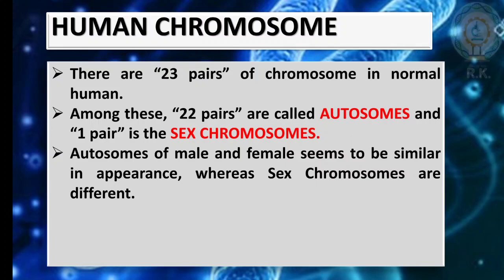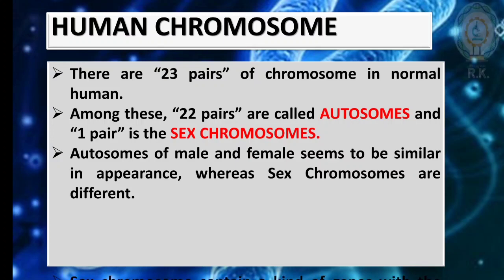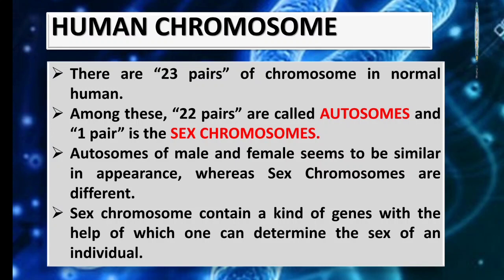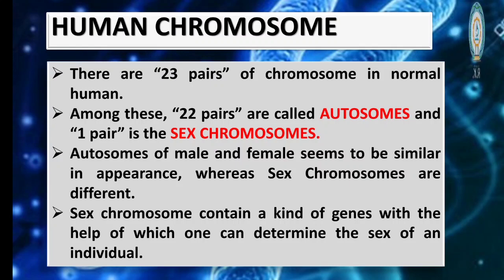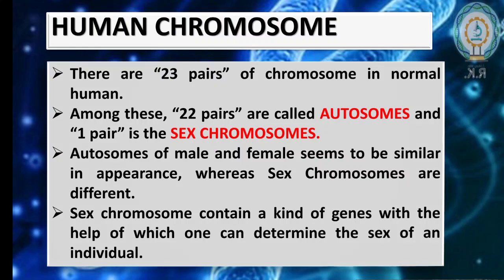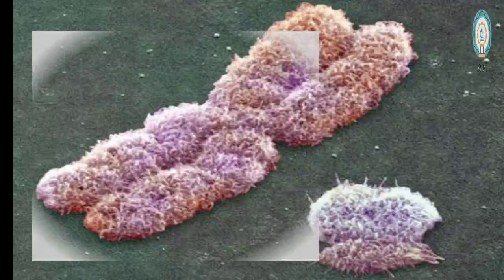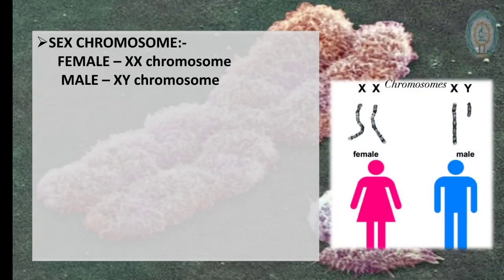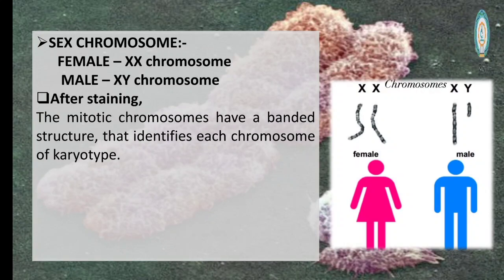Autosomes are the same in appearance in male and female, but sex chromosomes are different. Sex chromosomes contain a specific kind of genes with the help of which we can identify the sex of any individual — whether they are male or female. Females carry XX chromosomes and males carry XY chromosomes.